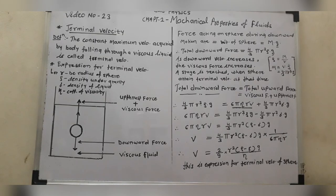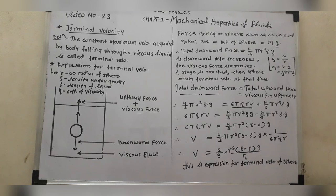Hello students, welcome to the next physics lecture. This is video number 23, chapter number 2: Mechanical Properties of Fluids. Now we have to see the last topic, that is terminal velocity. We have to define the terminal velocity and derive the expression for terminal velocity.